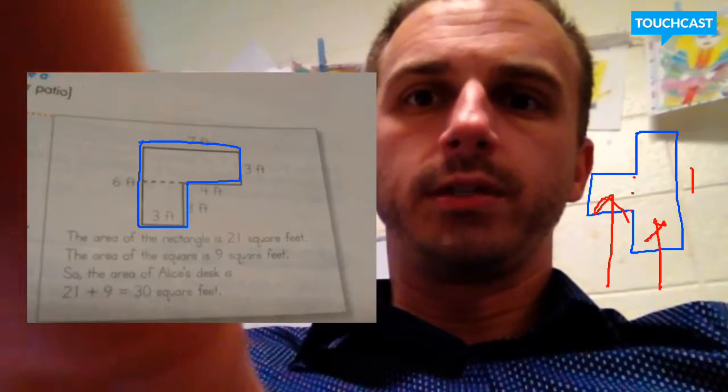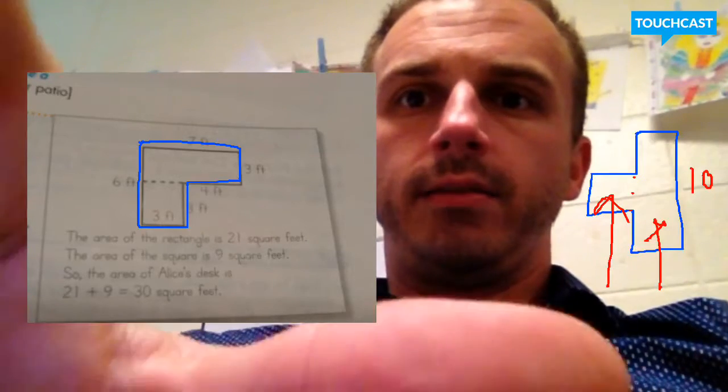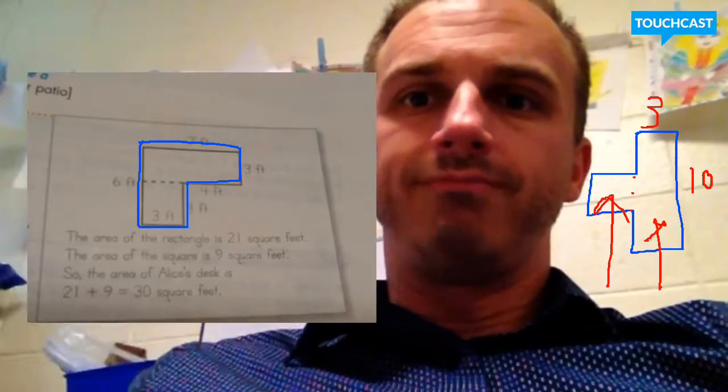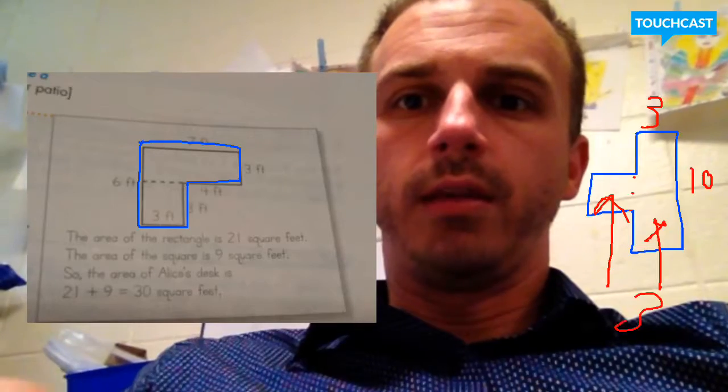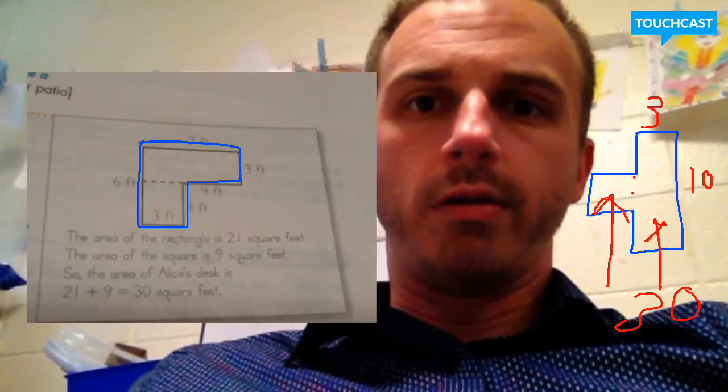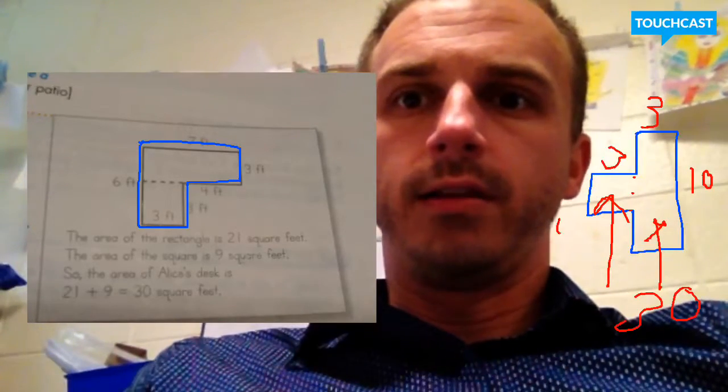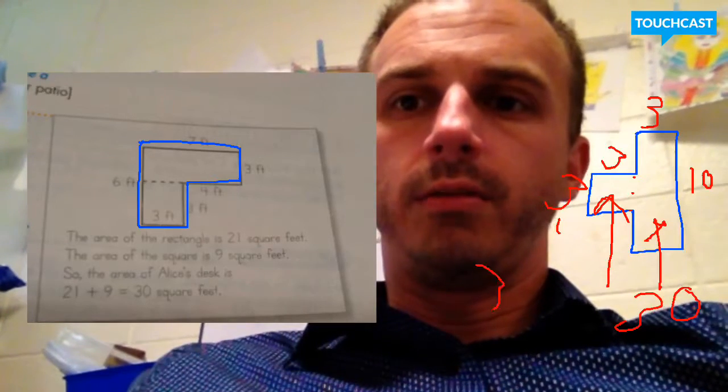So let's say I had this one was 10 on that side. This would be maybe 3. So the area of this one would be 30 square units. Let's say this one was also 3.